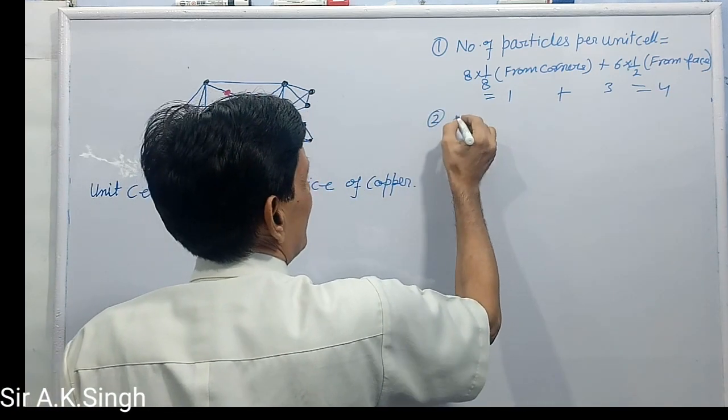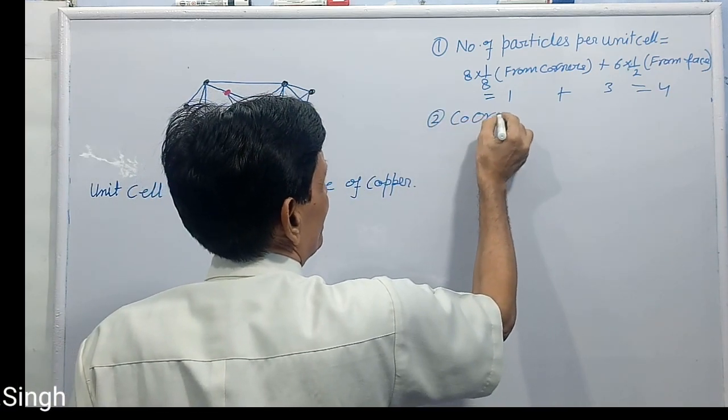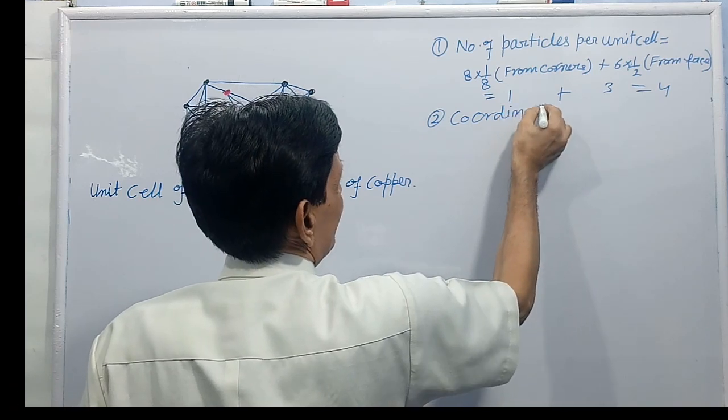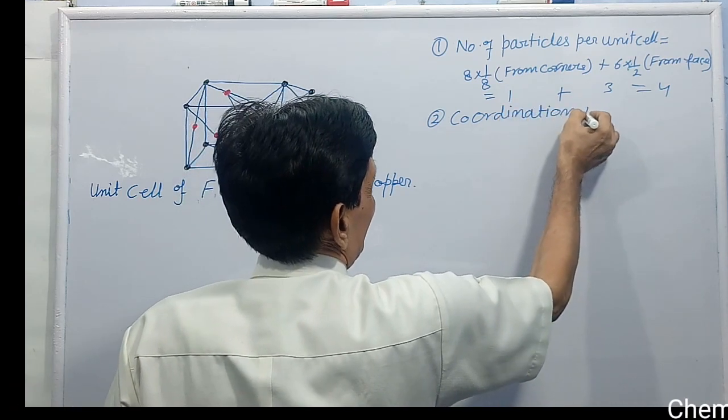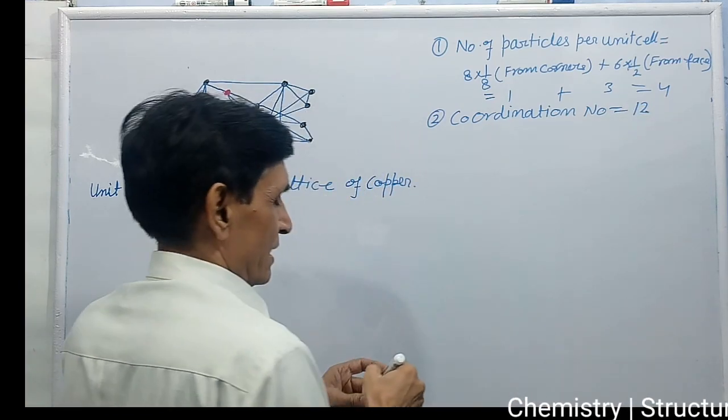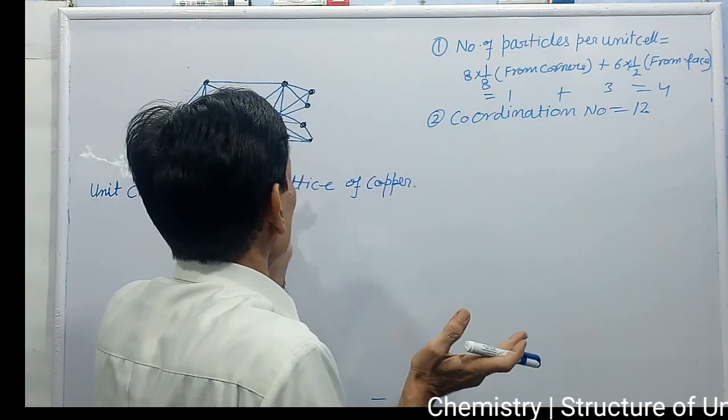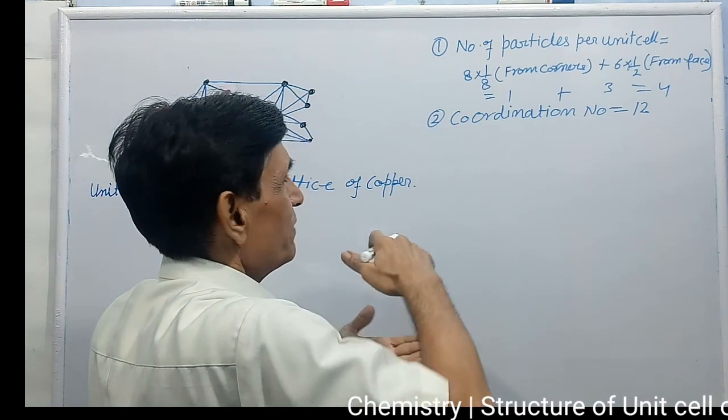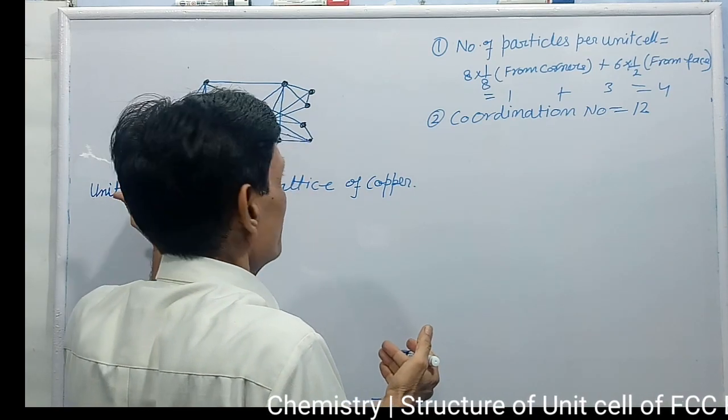Second point coordination number, coordination number equal to 12, 6 in one plane and 3 above the plane and 3 below the plane.